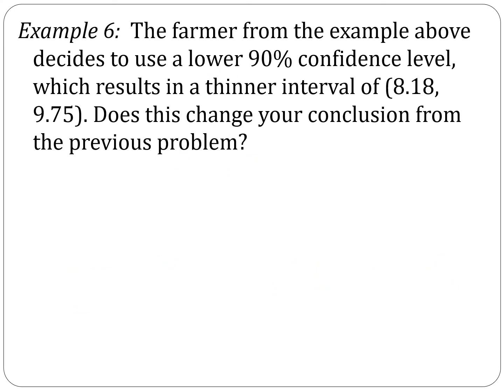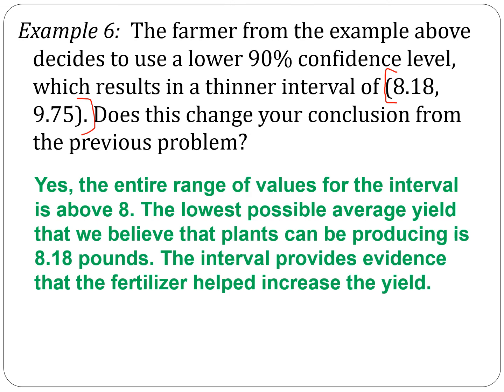Compare that with example six. The farmer decides to use a lower 90% confidence level. When we lower the confidence level, our interval gets thinner because we're not as confident that the true population mean is within those two numbers. His new interval is 8.18 to 9.75. Based on this interval, yes — the entire range of values is above eight. The lowest possible average yield we believe the plants can produce is 8.18 pounds, which is higher than eight, as is everything else in this interval. So the interval provides evidence that the fertilizer has helped increase the yield.